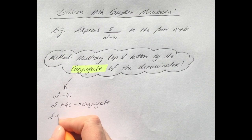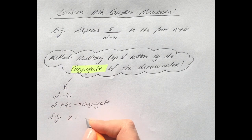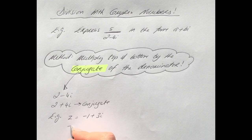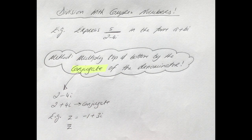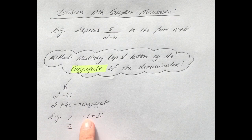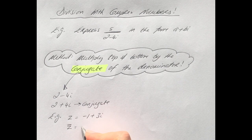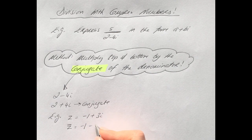Let's take another example. Say you have z equals minus 1 plus 3i. The conjugate can be denoted by z with a bar on top — watch out for that notation. The conjugate of this complex number is found by changing the sign of the imaginary part only, so it stays minus 1 but the plus 3i changes to minus 3i.